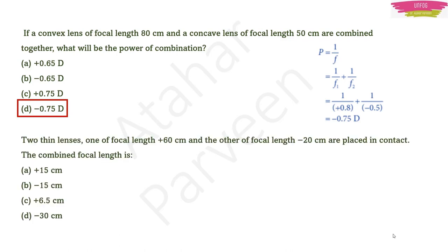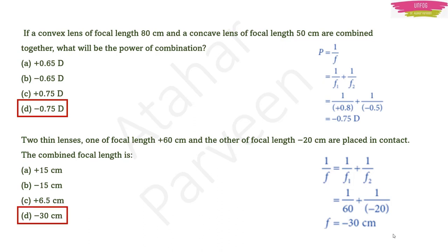Question: Two thin lenses — one of focal length +60 cm and another of focal length −20 cm — are placed in contact. What is the combined focal length? Use 1/f = 1/f1 + 1/f2. Substitute the values, take LCM, find 1/f, then take the reciprocal. The answer comes out to −30 centimeter.